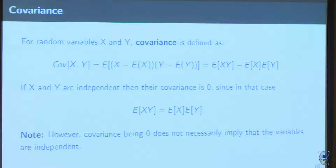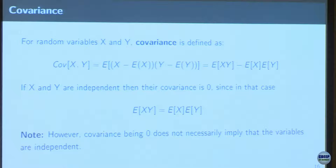Another concept is covariance — how two variables are related to each other. A positive covariance means if one increases the other will also increase. A negative covariance means if one increases the other will decrease. If X and Y are independent, the covariance would be 0. However, covariance being 0 does not mean they are independent — from a distribution, X and Y can be positively correlated somewhere and negatively correlated elsewhere, cancelling out to give 0, but they are still not independent.